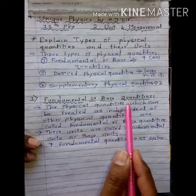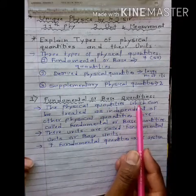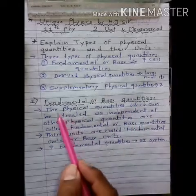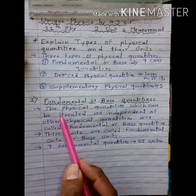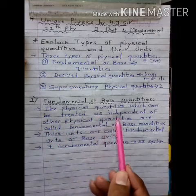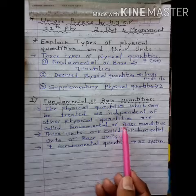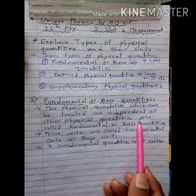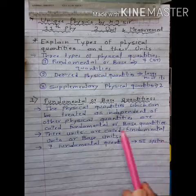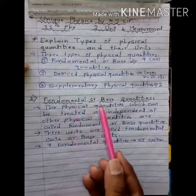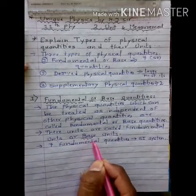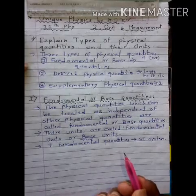Now we will explain these three topics one by one in detail. First type: fundamental or base quantities. The physical quantities which can be treated as independent of other physical quantities are known as fundamental or base quantities. Quantities which do not depend on other physical quantities are called fundamental or base quantities. Their units are known as fundamental units or base units.